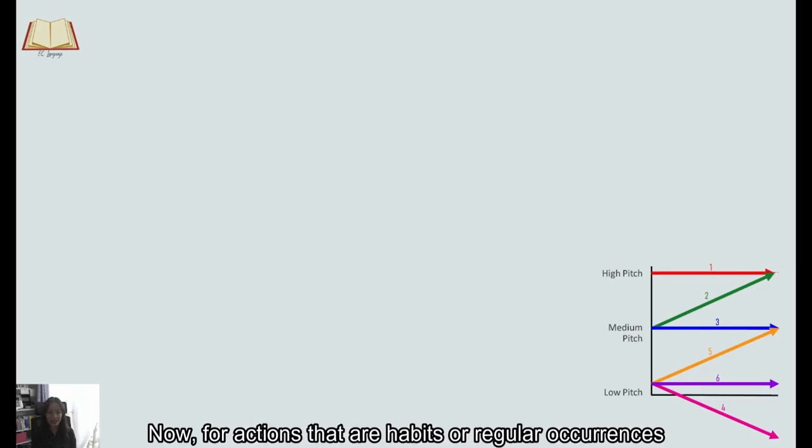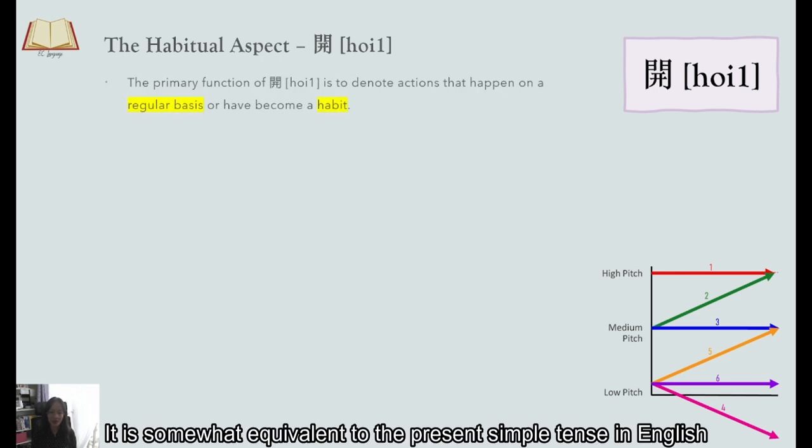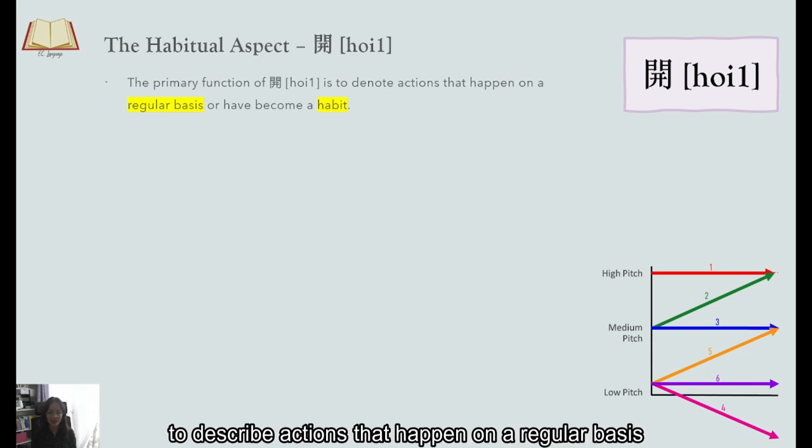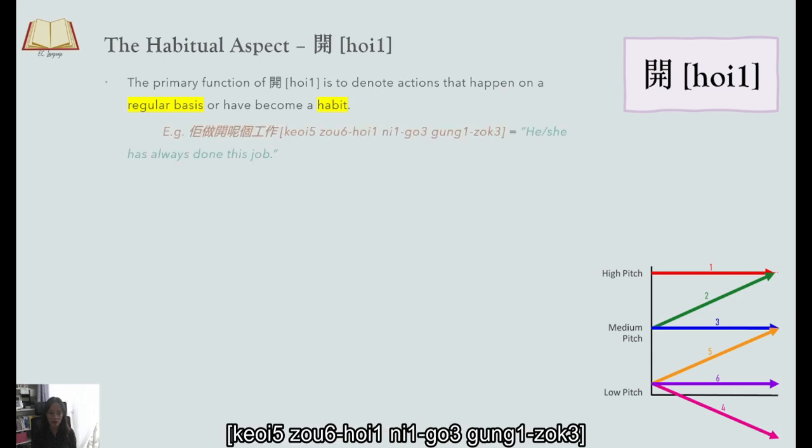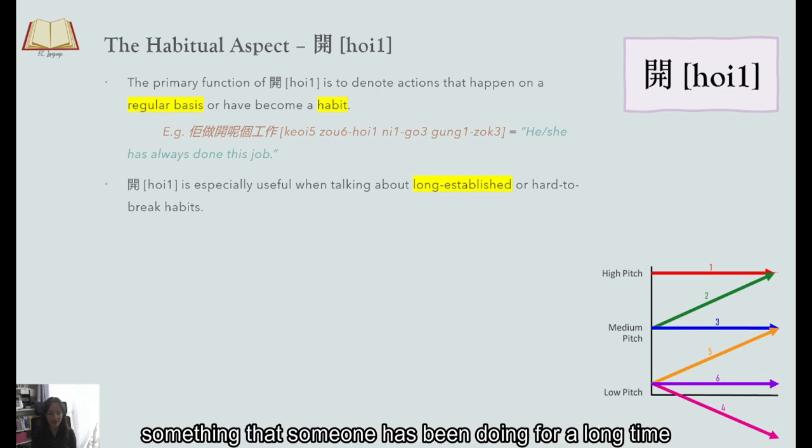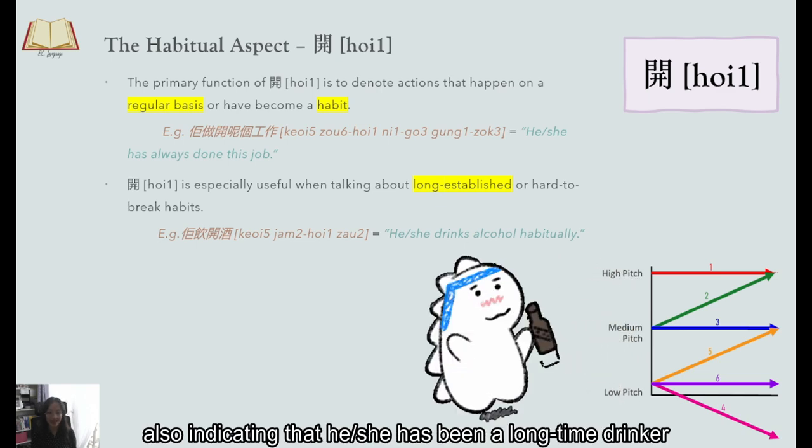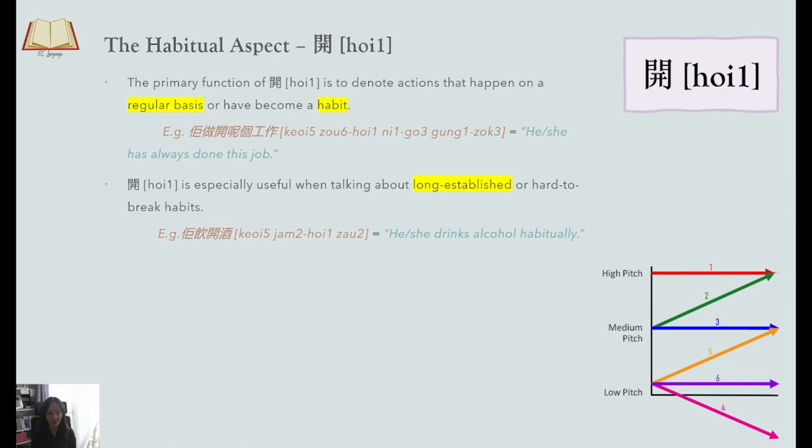Now for actions that are habits or regular occurrences we have the habitual aspect which is marked by 開 It is somewhat equivalent to the present simple tense in English to describe actions that happen on a regular basis For instance 佢做開呢個工作 means the job is a usual thing for him or her They do it on a regular basis It is also used to talk about long established habits something that someone has been doing for a long time Just like for someone who drinks regularly 佢飲開酒 also indicating that he or she has been a long time drinker